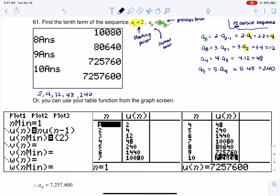And you can start to play this out on your calculator and get all the way up to a sub 10. And you can see me playing it out here. I'm actually finally getting to a sub 10, and I get this pretty large number, 7,257,600. But I do get there eventually.